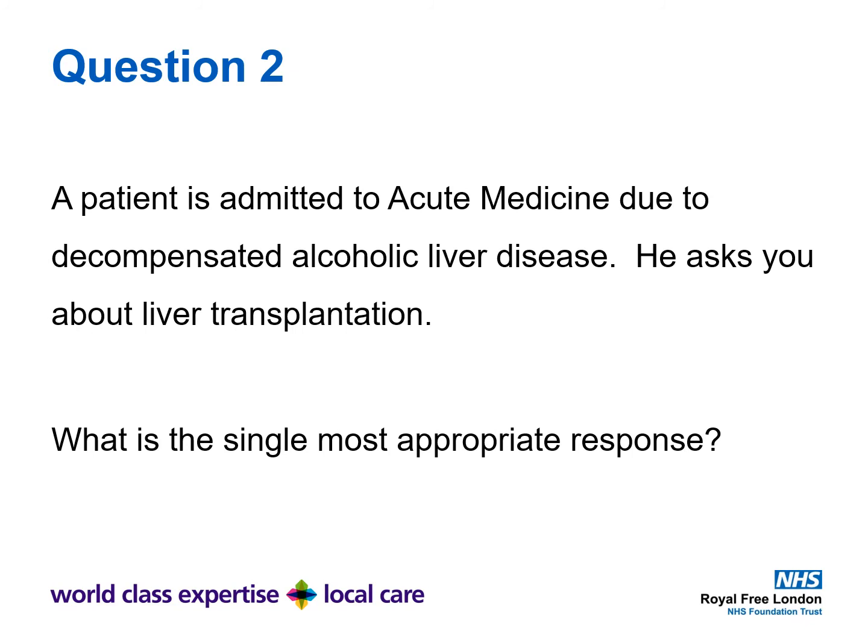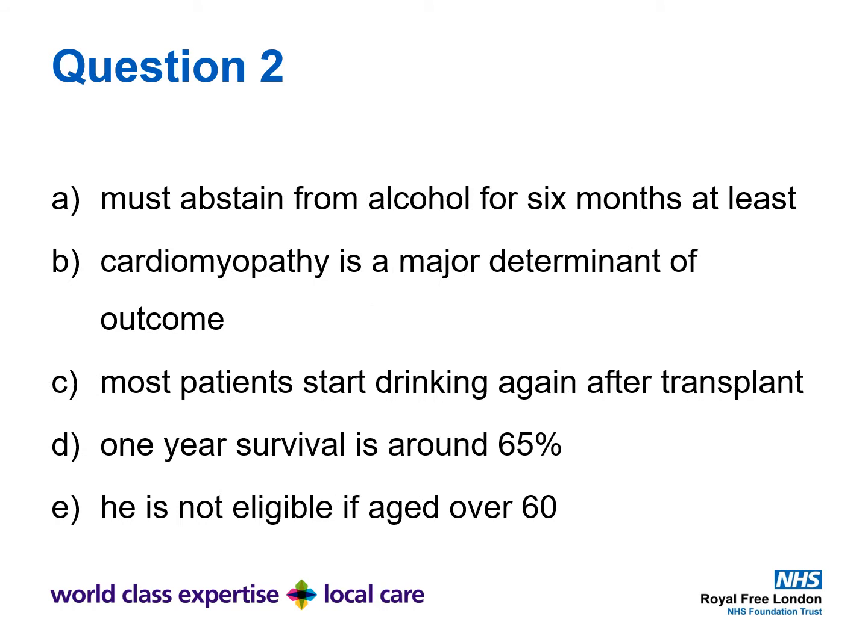Question 2. A patient is admitted to acute medicine due to decompensated alcoholic liver disease. He asks you about liver transplantation. What is the single most appropriate response? A: They must abstain from alcohol for six months at least. B: Cardiomyopathy is a major determinant of outcome. C: Most patients start drinking again after transplantation. D: One year survival is around 65%. E: He is not eligible if aged over 60.